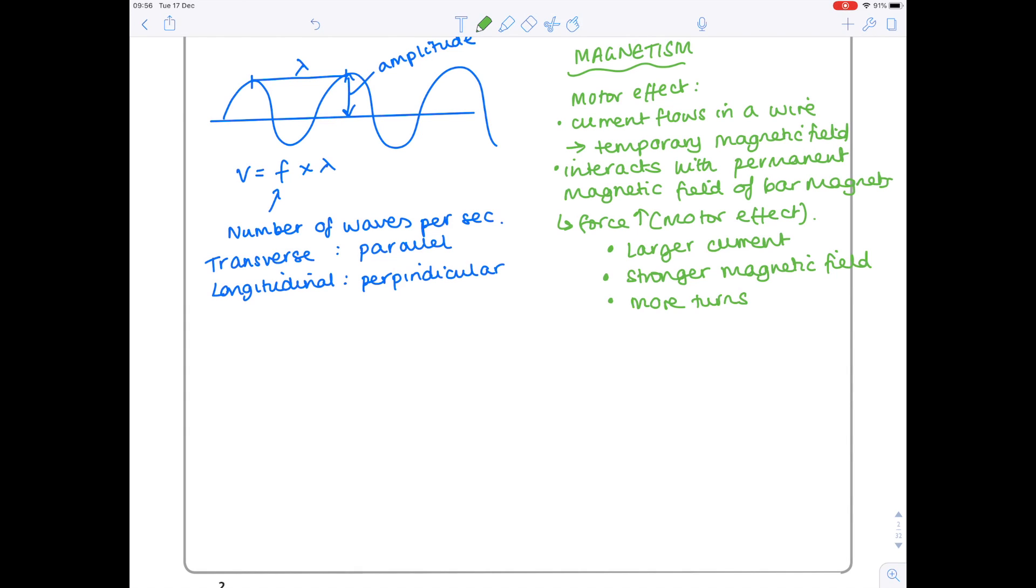Don't forget Fleming's left hand rule. This is going to be embarrassing because I can't draw. That is really awful. Okay, so this is my thumb which is the direction of the force. This is my first finger which is the direction of the magnetic field, and this is my second finger which is the direction of the current.